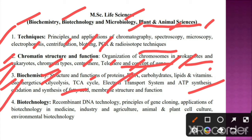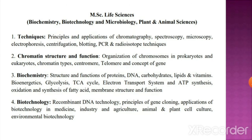Unit 4 is about biotechnology. Here we have to understand biotechnology with respect to rDNA technology, gene cloning, and applications of biotechnology in medicine, industry, and agriculture. We also need to understand animal and plant cell culture and environmental biotechnology. These are the four units for the CUET PG Life Sciences Part B.